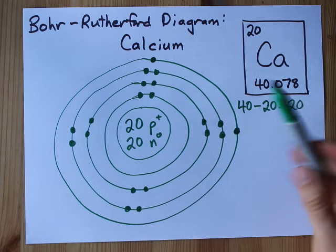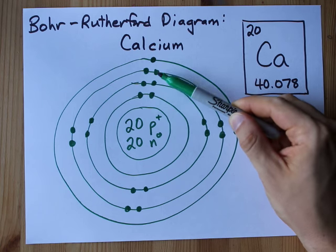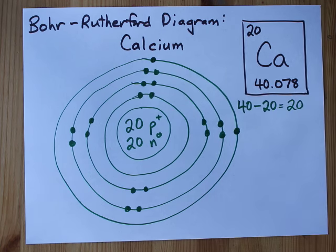same as the number of protons. So here we are, 2, 8, 8, and 2 makes 20 electrons total.